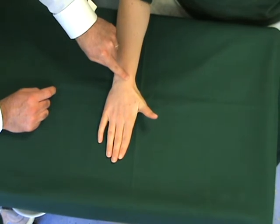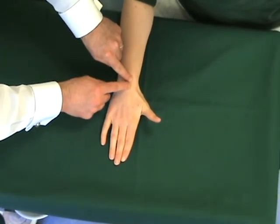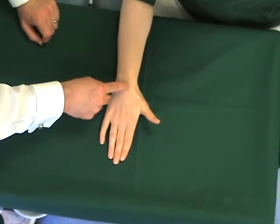Lister's tubercle is a very good bony landmark. Not only does it tell us where EPL is, approximately 1cm distal to it is the interval between the scaphoid and the lunate, the scapholunate interval.